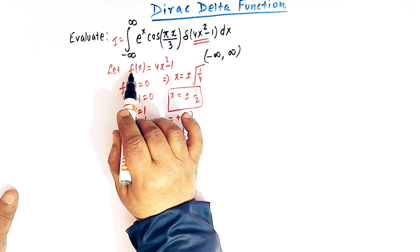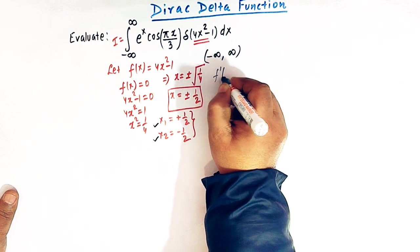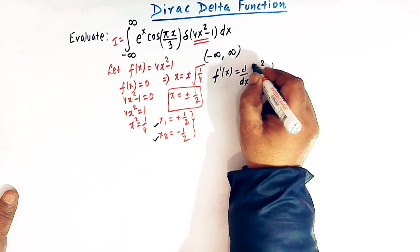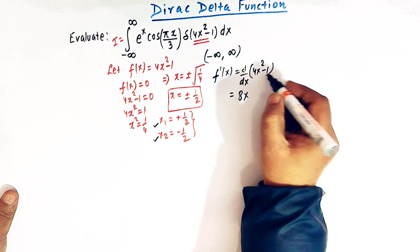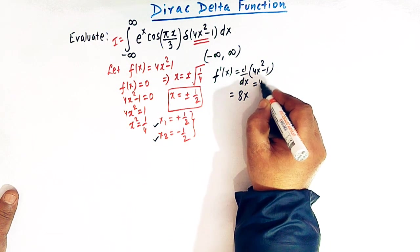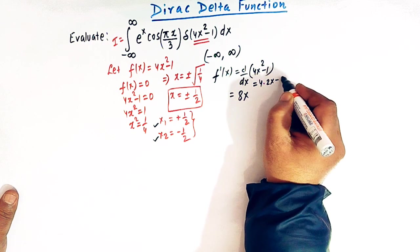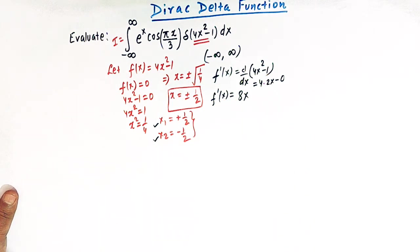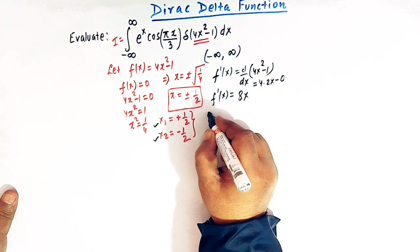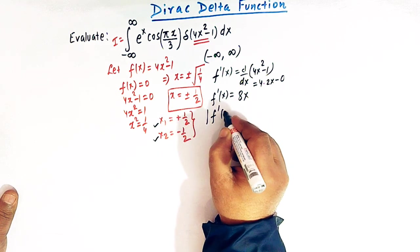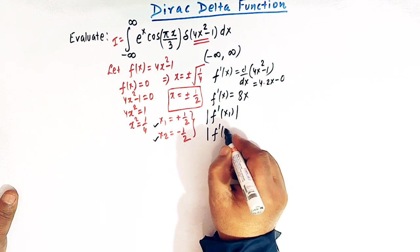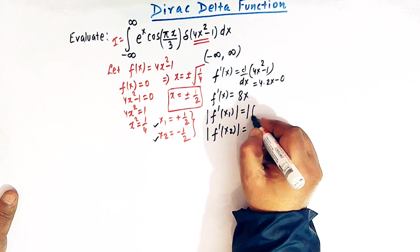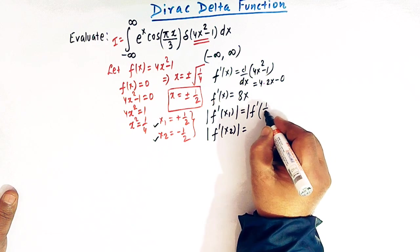Now let us differentiate f(x). The derivative f′(x) = d/dx of (4x² minus 1). The derivative of x² is 2x, so we have 4 times 2x, and the derivative of 1 is 0. Therefore f′(x) = 8x. The next step is to get the values of |f′(x₁)| and |f′(x₂)|. So |f′(x₁)| = |f′(1/2)|.